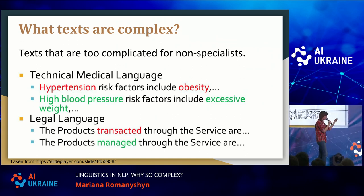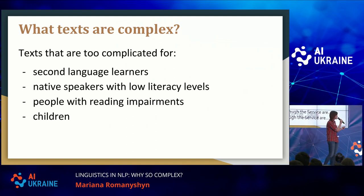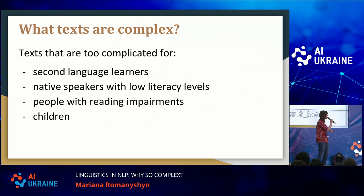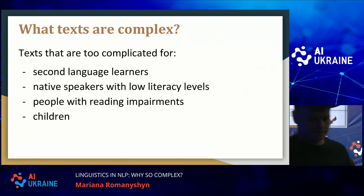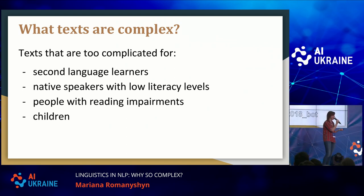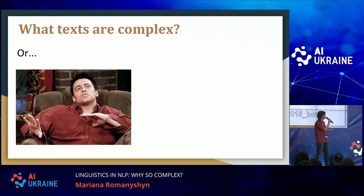If we read text like that, it lowers our comprehension — we don't understand it well. If we had a tool that could automatically simplify this text, we could read and understand it better. Or say you were a second language learner, like most of the people in the room. Or say you were a native speaker but with a low literacy level, or you have some disability or reading impairment, or even if you're a child but you want to understand something. That's how Simple Wikipedia appeared, because people with lower reading comprehension want to understand the same information that you and I do.